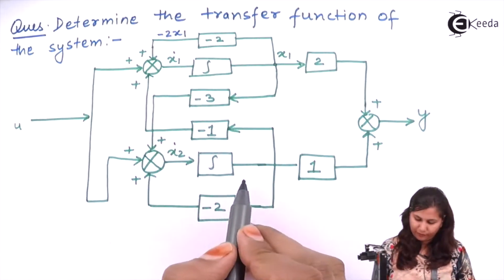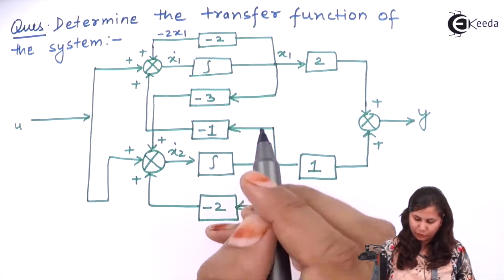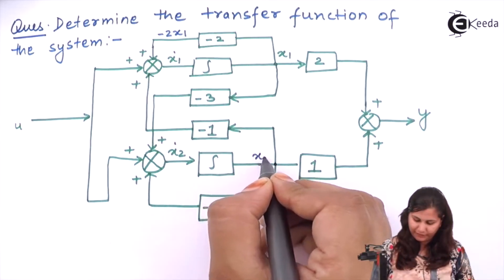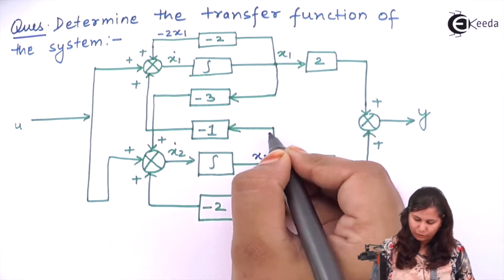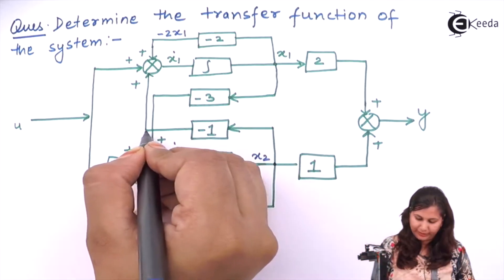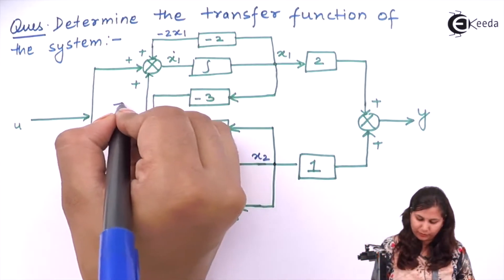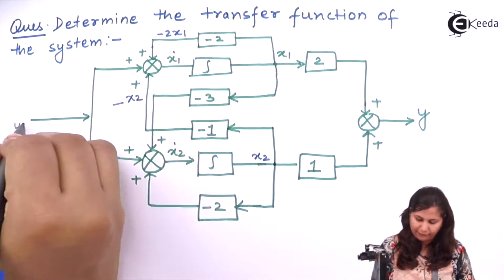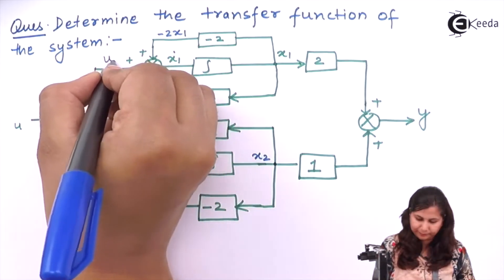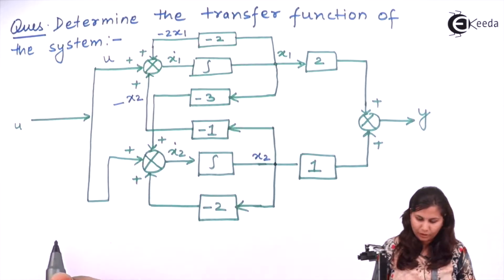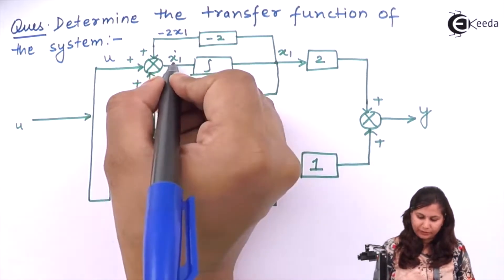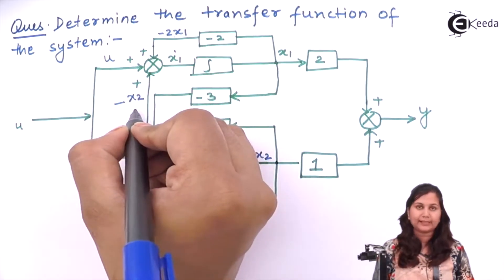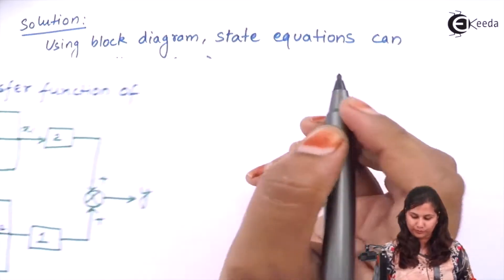Then from here, this is our x2. At this point we have x2, so x2 multiplied with minus 1 gives minus x2. And from here, u is coming. So x1_dot will be minus 2·x1 minus x2 plus u.